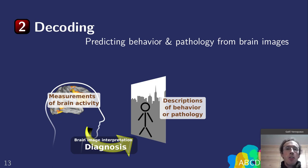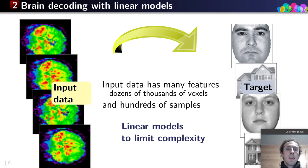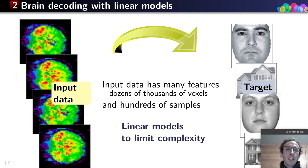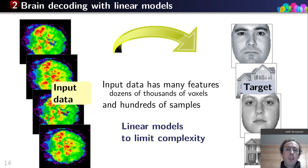Let me focus on decoding — the task of predicting behavior or pathology from brain images. This is typically done with linear models, because fMRI data has a huge number of features — dozens of thousands of voxels — and quite often we only have a small number of samples in our training set. So we need to use the simplest possible models — linear models — to limit complexity and the noise that our model will capture.